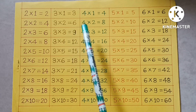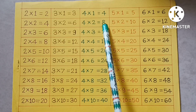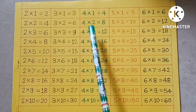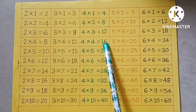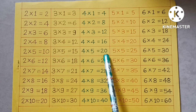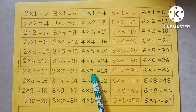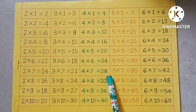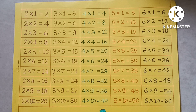4×1=4, 4×2=8, 4×3=12, 4×4=16, 4×5=20, 4×6=24, 4×7=28, 4×8=32, 4×9=36, 4×10=40.